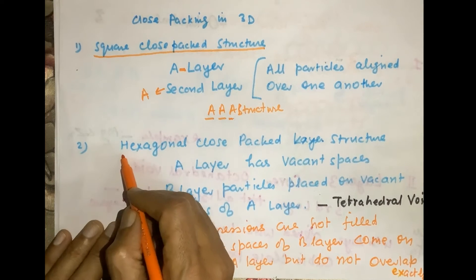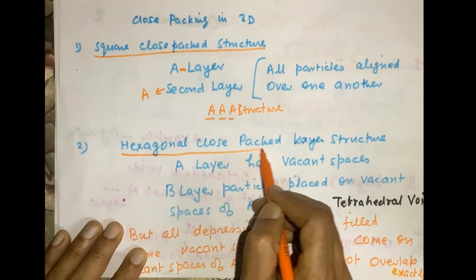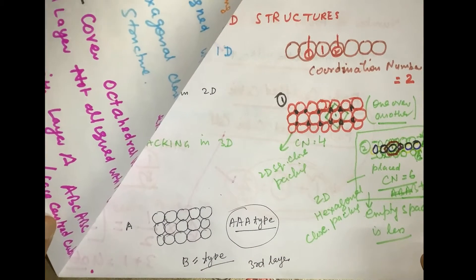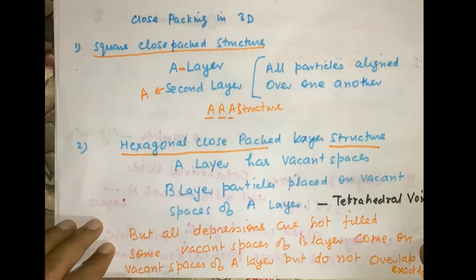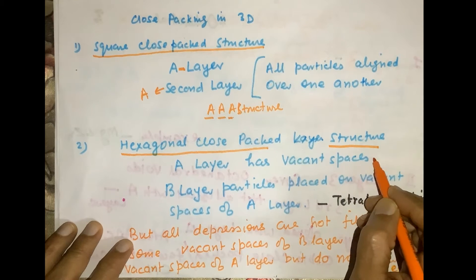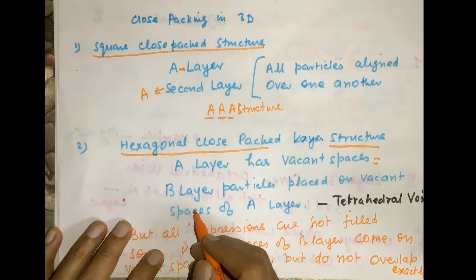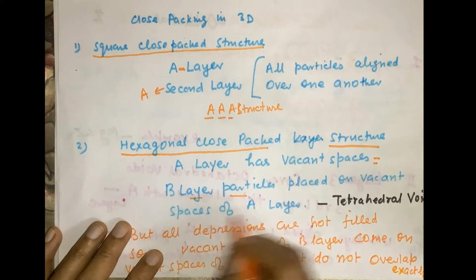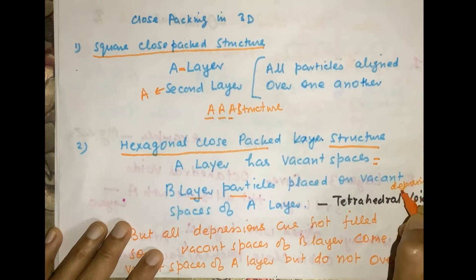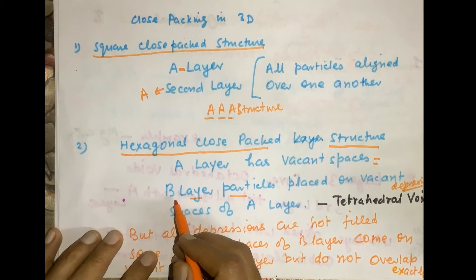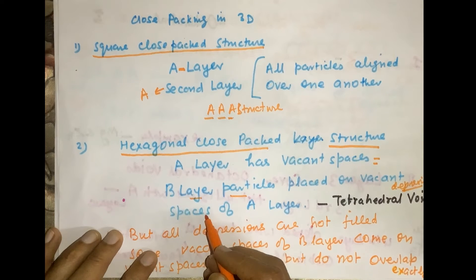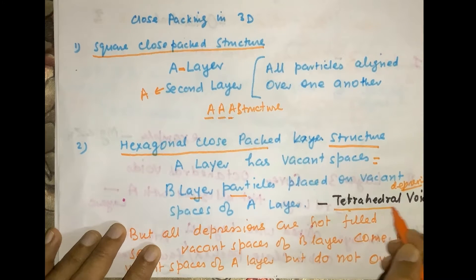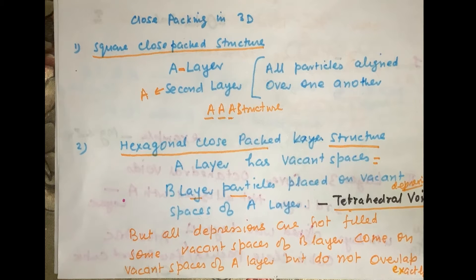The second method is called the hexagonal close packed structure. In this, layer A has vacant spaces, and when we place layer B, the particles of layer B are placed on the vacant spaces or depressions in layer A. So the particles in layer B occupy the empty spaces or depressions of layer A.